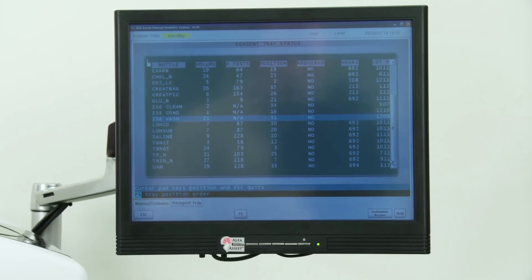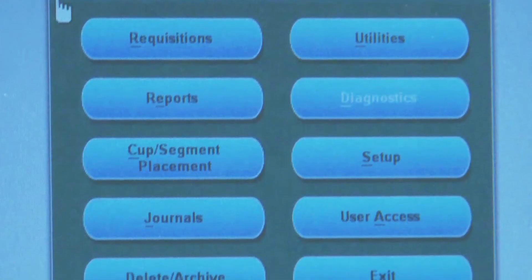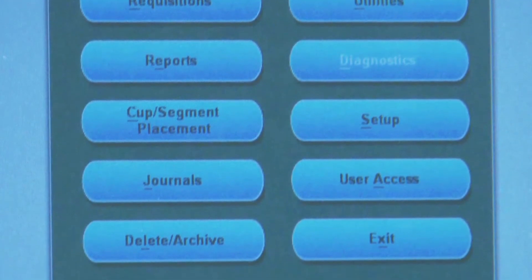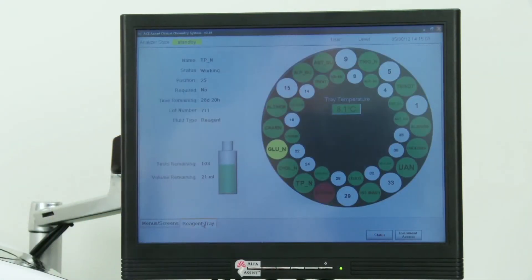The ACE-XL uses a touchscreen, Windows-embedded, all-in-one PC. The system has an intuitive interface, allowing users to quickly navigate the system. Instrument operation takes just the touch of a finger, even while wearing gloves.